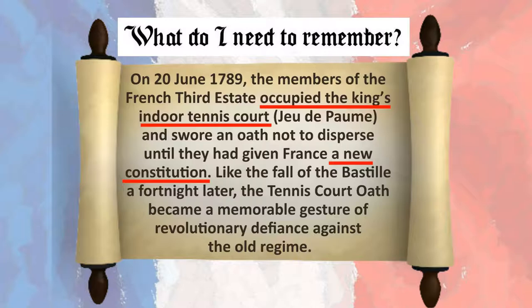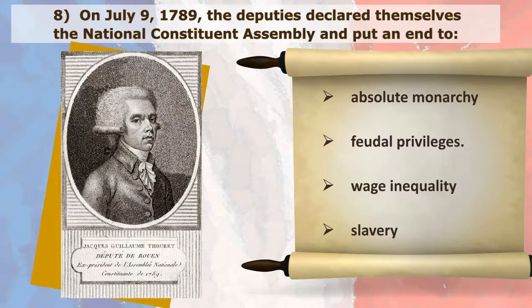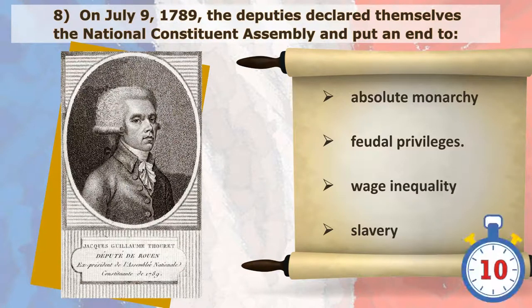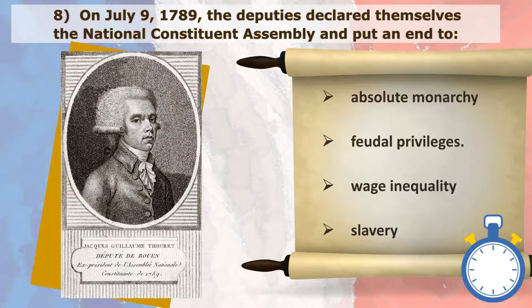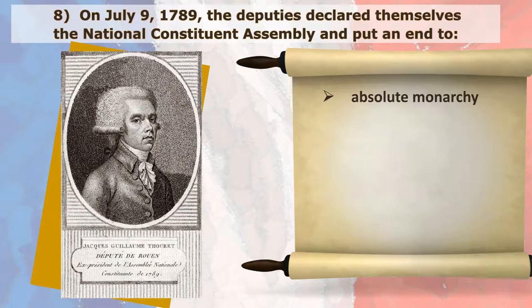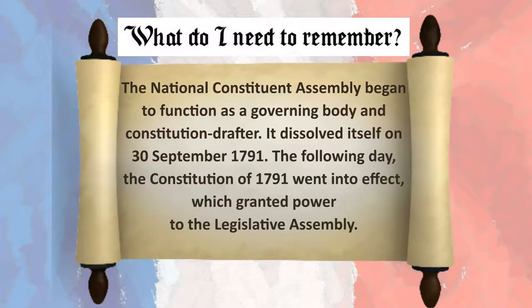On July 9, 1789, the deputies declared themselves the National Constituent Assembly and put an end to absolute monarchy. The National Constituent Assembly began to function as a governing body and constitution drafter. It dissolved itself on 30 September 1791. The following day, the Constitution of 1791 went into effect, which granted power to the Legislative Assembly.